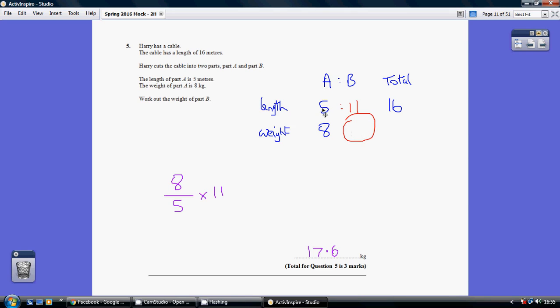We're trying to get the proportion of 5 to 11, given we have a weight of 8. How do we find the appropriate proportion? We take our 8, divide by 5, and multiply by 11, giving us 17.6.